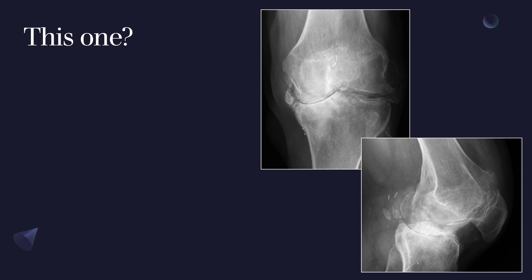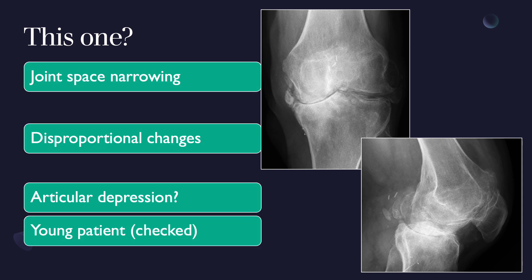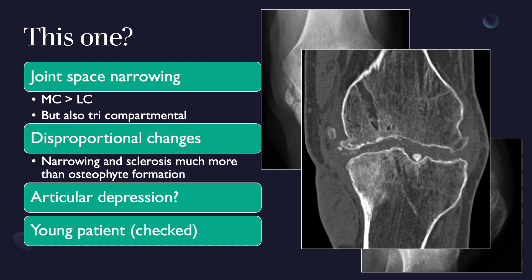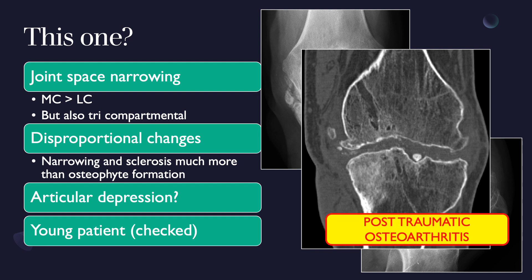The next case initially looks like fairly normal osteoarthritis: there is joint space narrowing with the medial compartment more involved than the lateral, representing tricompartmental osteoarthritis. However, there is a lot of joint space narrowing and subchondral sclerosis but less osteophyte formation than you'd typically expect. You also get a sense that the lateral tibial plateau is somewhat depressed, and when you check, this patient is younger than usual.